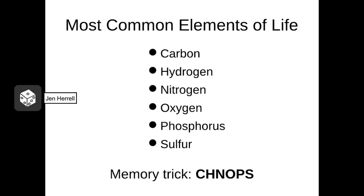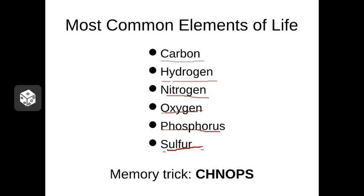Although there are many different elements that exist in nature, there are only a very few that make up living things in any large amount. Living things are mainly made of carbon, hydrogen, nitrogen, oxygen, phosphorus, and sulfur. There are other elements found inside living things, such as iron and zinc, but these tend to be found in very small amounts — we call them trace elements. There is a memory trick for learning which elements are most common: it spells out the word SCHNAPPS. So if you're trying to remember what living things are made of, remember we're mainly made of SCHNAPPS.